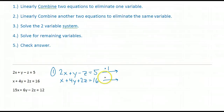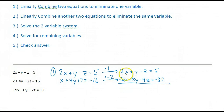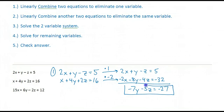To eliminate x, I'm going to multiply my first equation by 1 and my second equation by negative 2. That way, when I linearly combine, my x's will have opposite coefficients. Now I add — my x's will be eliminated, and I'm left with negative 7y minus 5z equals negative 27. Step 1 is complete.